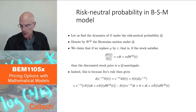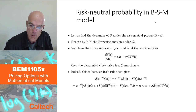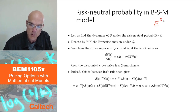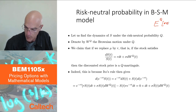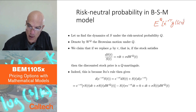Remember risk-neutral pricing: in the general formula, in any model, if you can replicate the claim, the price is going to be the expectation under risk-neutral probability Q of the discounted payoff of the claim. I'll write this as e to the minus rt times g of S of t — some function g of S of t — for European path-independent options.